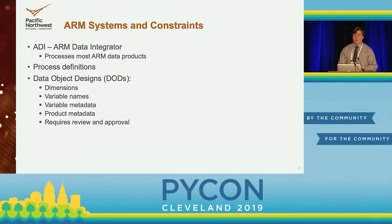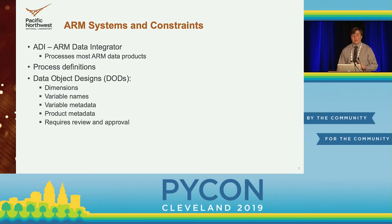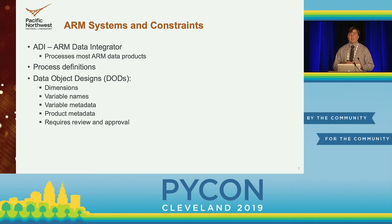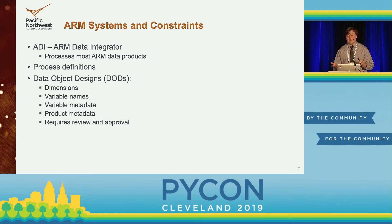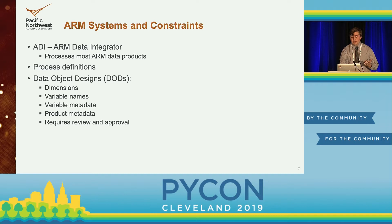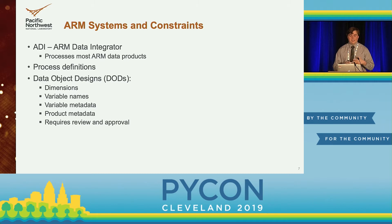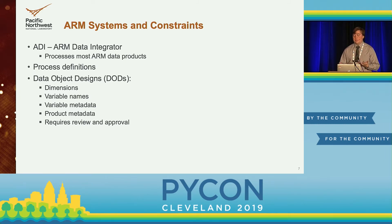The first system we need to work with is ADI, the ARM Data Integrator, which processes most of ARM's data products. We need to set up process definitions, which define which ARM sites have radar data that we need to ingest. And we need to create data object designs, or DODs, to define specifications for the output data — such as the dimensions, variable names, variable metadata, or product-level metadata. These data object designs require review and approval by ARM's metadata group to ensure they meet ARM's standards and are useful for users.